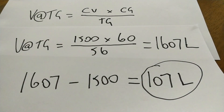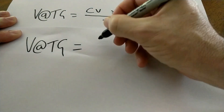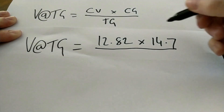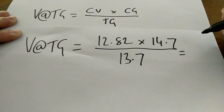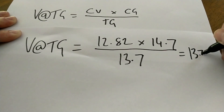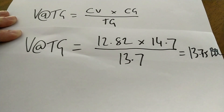Let's try it again with barrels and Plato. Let's say I've got 12.82 barrels in the kettle, our target gravity is 13.7 Plato, and the current gravity at the end of the boil is 14.7 Plato. Our volume at 13.7 Plato equals 12.82 × 14.7 ÷ 13.7 = 13.75 barrels.